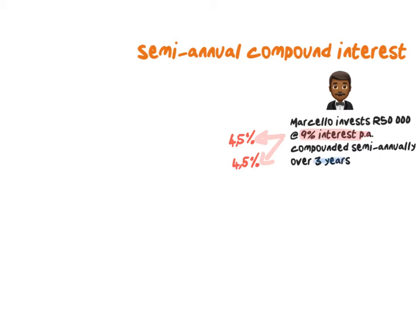If we get interest over a three-year period, how many six-month periods are there? For every year there are two six-month periods, meaning in total you will get interest six times. So I will have to multiply by six fractions of 104.5 over 100. If this becomes too big, remember you can get an answer in between and then continue from there.